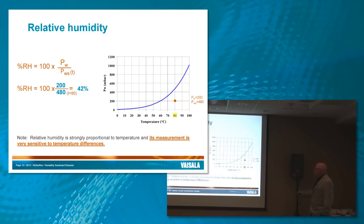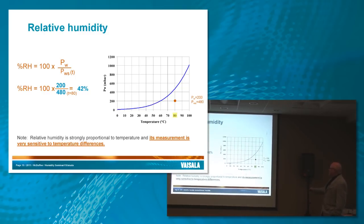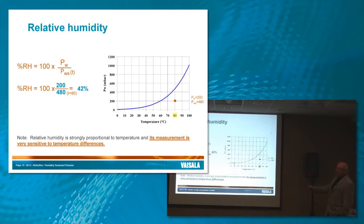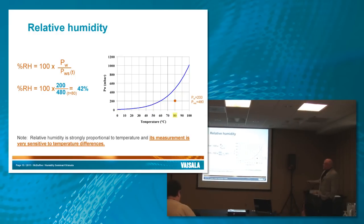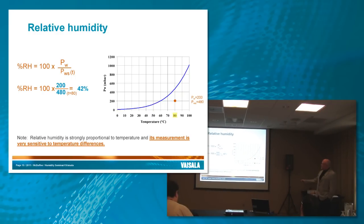But again, it's important to note that as the temperature changes, PWS here changes. So if you don't have a stable temperature, if your sensor is measuring relative humidity and you don't have a stable temperature, this keeps changing. And if this keeps changing, your measurement is going to be off. And we'll talk a lot more about that in the best practices section.